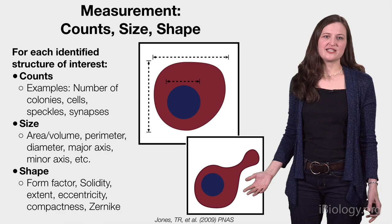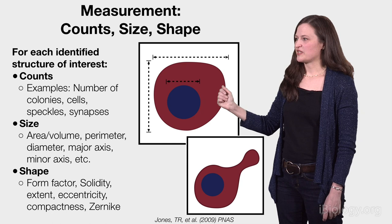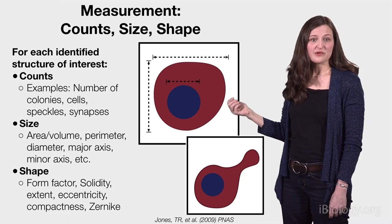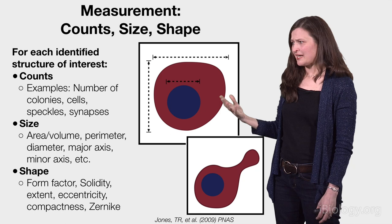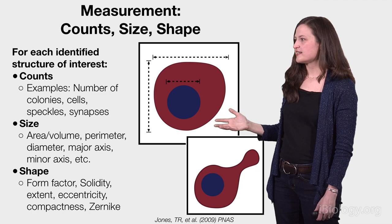Some measurements that you make from images are very straightforward. You can look at, for example, the counts — how many of a thing is within the image. You can look at shape and size. You might be surprised to find that there's quite a number of metrics for both of these categories. The shape ones in particular capture many different aspects of shape, such as the extent of indentations into the structure, how wiggly the edges are, and so on.